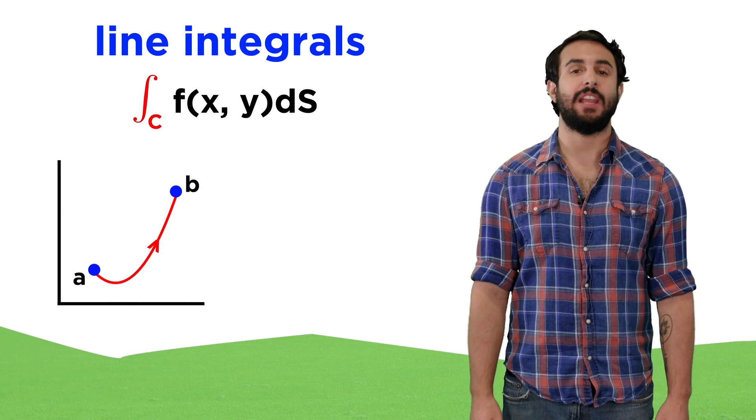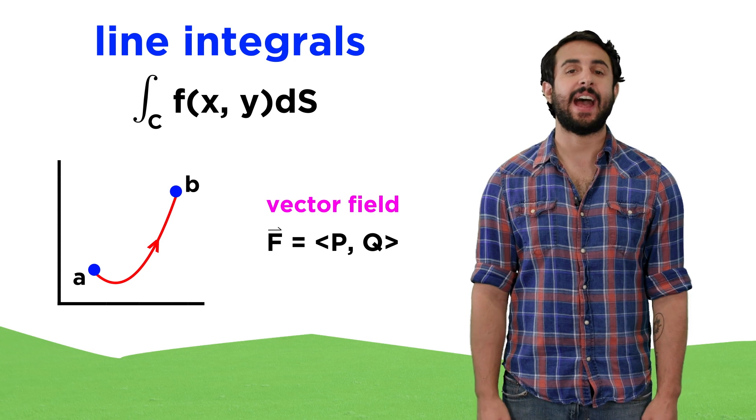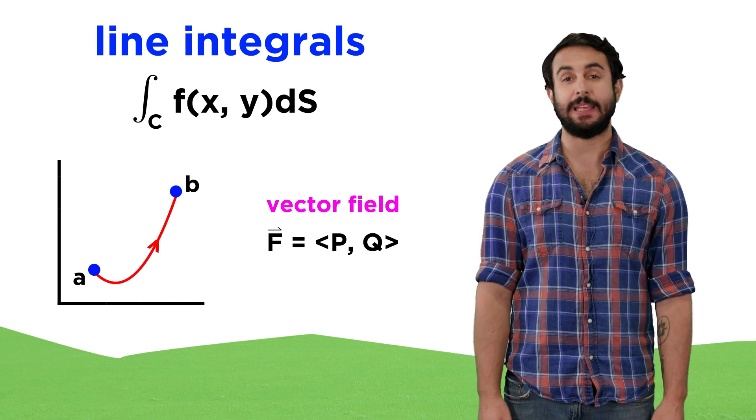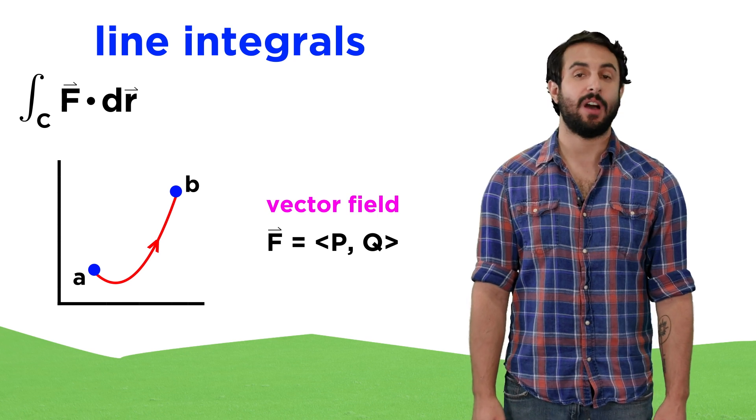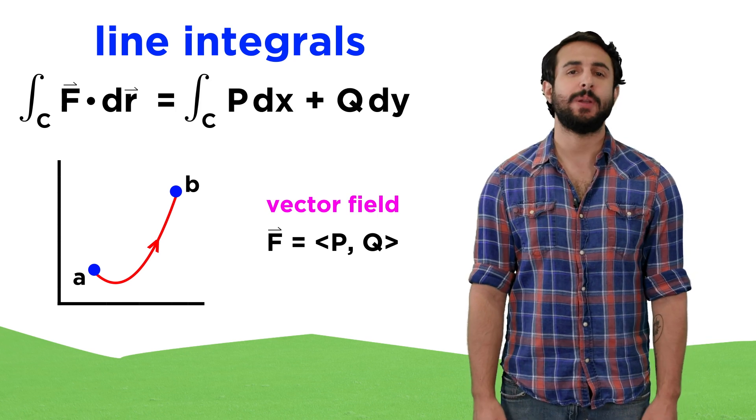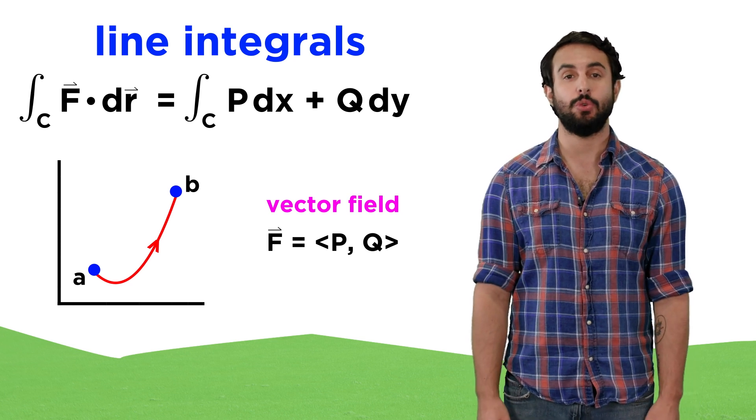Recall that with line integrals, we can integrate along a curve C, and if we have a vector field F equals PQ, then the form of the line integral is the integral along C of F dot dr, which becomes the integral along C of Pdx plus Qdy.